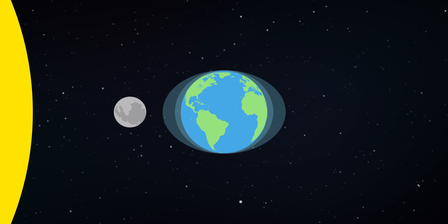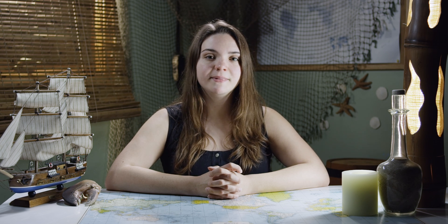The moon causes the tides because it creates a gravitational differential, referred to as the tidal force. The moon exerts a gravitational force on the Earth, but this force is affected by distance. This means that areas on the Earth's surface that are close to the moon experience a greater gravitational pull than areas that are farther away. Since the ocean sits on top of the Earth, the force it actually feels is the difference between the gravitational force at the surface of the Earth and the force felt at the center of the Earth.